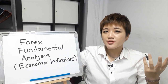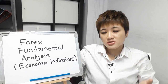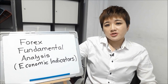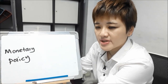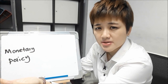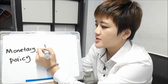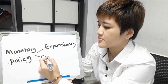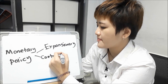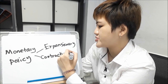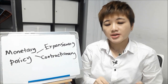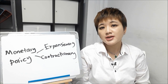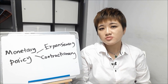Economic indicators also tell you what's going to happen in the stock market and bond markets. Whether you like economics or not, you need to learn this. Central banks implement monetary policy — you have expansionary monetary policy and contractionary monetary policy. Central banks look at economic indicators such as inflation to determine what their interest rates are going to be.